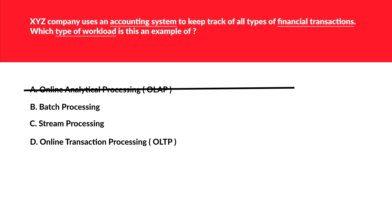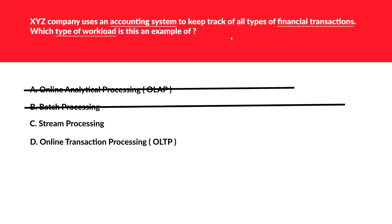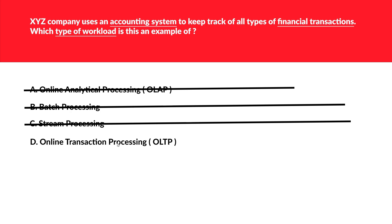Stream processing is used for continuous streams of data and mission-critical or production-line workloads — we can't see those keywords here, so it's false. That leaves OLTP, which is correct because OLTP is used for accounting and financial transaction systems and provides strong consistency. OLTP is the correct option.